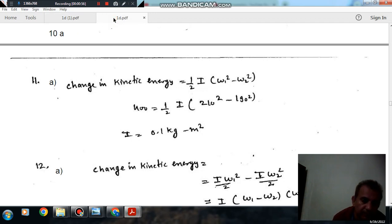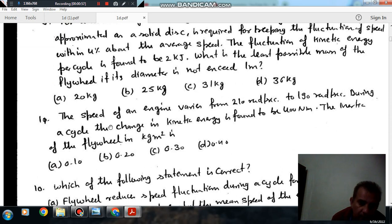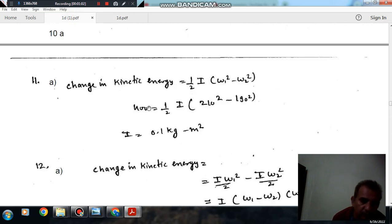And the change in kinetic energy is given as 400 Nm. So, equating it equal to 400 Nm, we can find out I. So I comes out as 0.1 kg meter square.